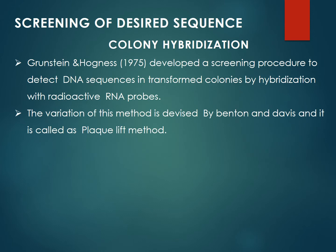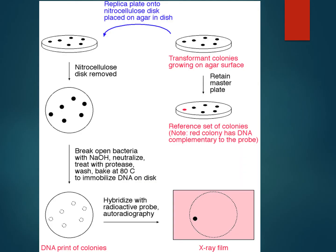Now, the screening of desired sequence is the first method: colony hybridization. We have already explained the selection of recombinants; I will show you the link in the description box. I will show you the details and the picture.